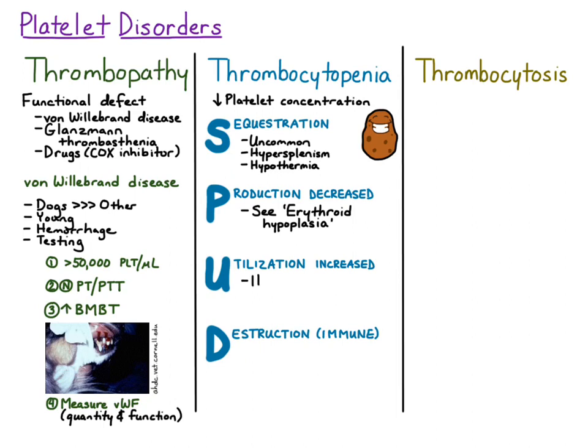Increased utilization most commonly occurs with hemorrhage. During times of hemorrhage, the platelets are used to stop the bleeding, so you can see mild to moderate thrombocytopenia secondary to hemorrhage. Usually with hemorrhage, the thrombocytopenia is not marked — platelet concentration is typically greater than 50,000 per microliter.